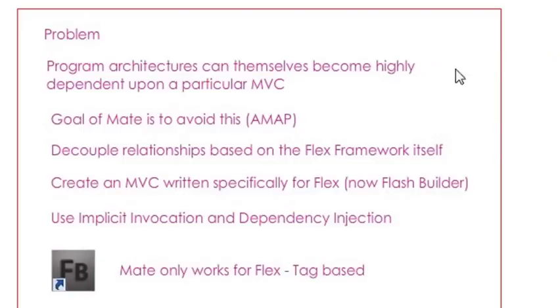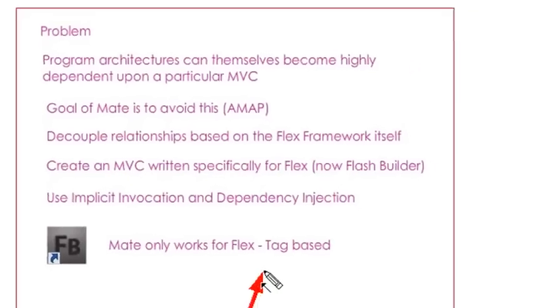We want to decouple relationships based on the Flex framework itself. We want to create an MVC written specifically for Flex, now Flash Builder, and use what's called implicit invocation and dependency injection. Those are going to be the two keywords when dealing with MATE, and we're going to explain what those mean. Once again, MATE only works with Flex. It is a tag-based system.